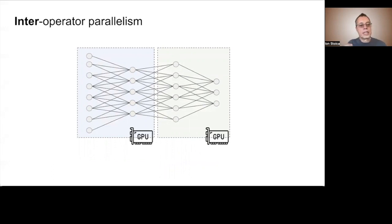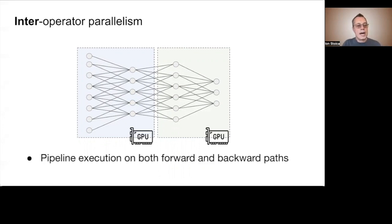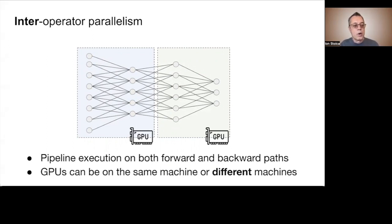The complexity of inter-operator parallelism is compounded by the need to pipeline the execution on both the forward and backward path, and the fact that GPUs can be on the same or different machines, which provide very different communication characteristics.